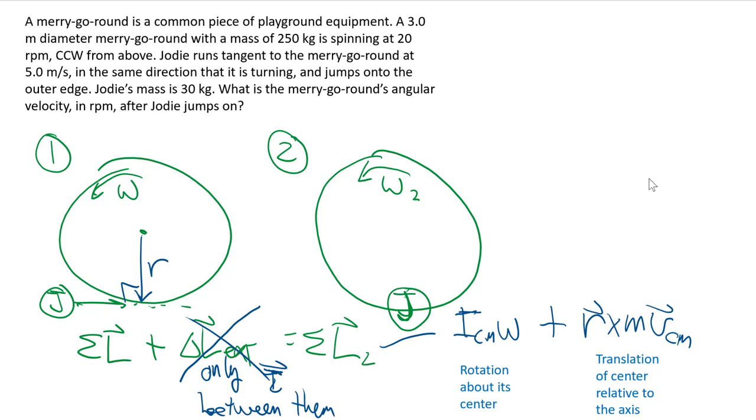So let's collect our knowledge and data into our table as usual. For the merry-go-round, the angular speed is 20 rpm to begin with, and we're wondering what it is afterwards.